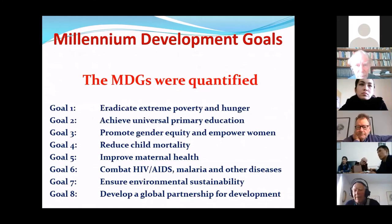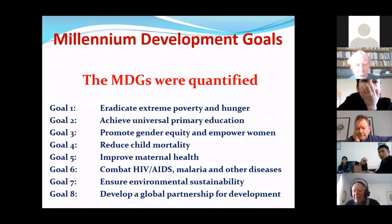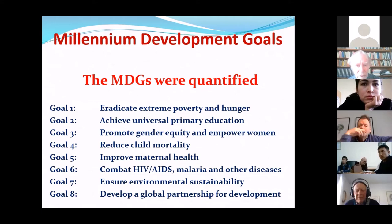Looking at the Millennium Development Goals: there was a timeframe to 2015, they were all quantified, and set out how much should be achieved during those 15 years. Some of these goals were actually met — for example, Goal 2, Universal Primary Education, was quite good. The economic goals were also quite well developed. There is still much to do in terms of poverty and maternal health.